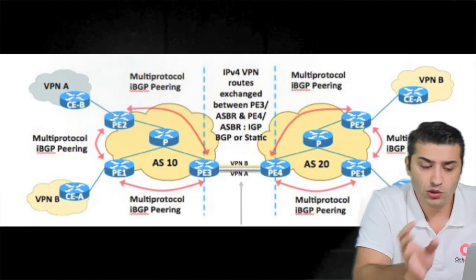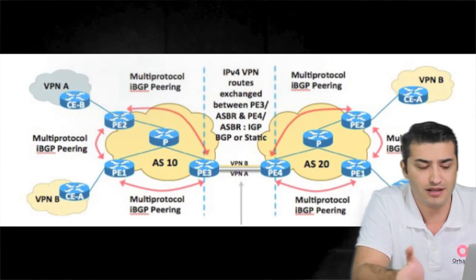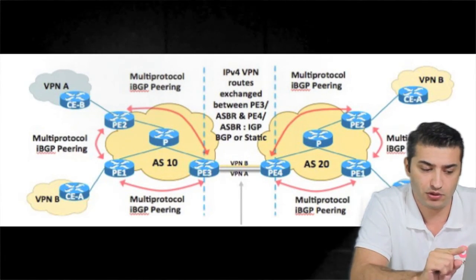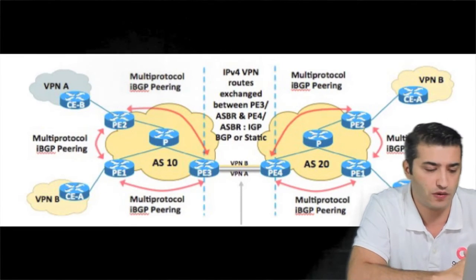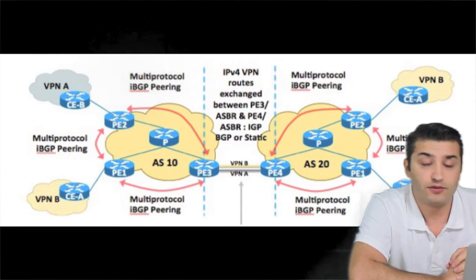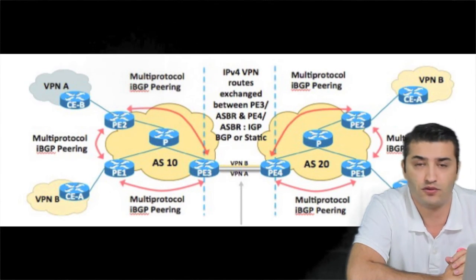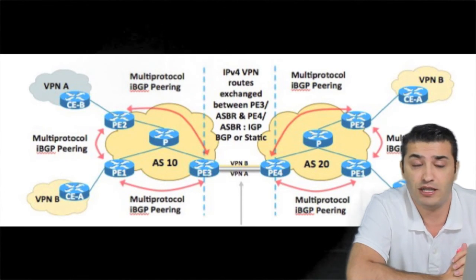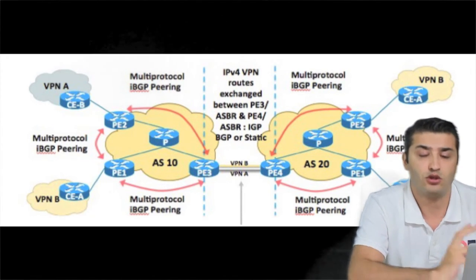The good thing is the service providers will treat each other as customers. There is no MPLS between the service providers — just IP configuration between them. From the security point of view, since these two service providers are not redistributing any information other than customer routes, their infrastructure information like loopback addresses of the PEs or route reflectors will not be redistributed between the service providers, which is very good from a security standpoint.